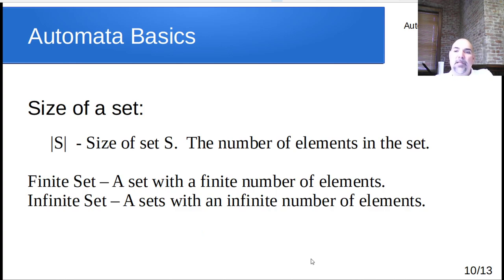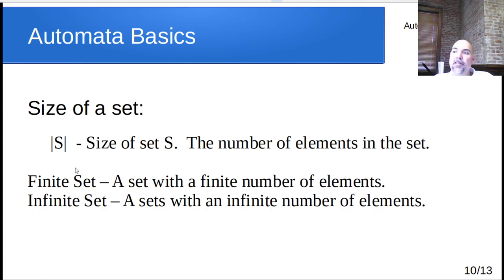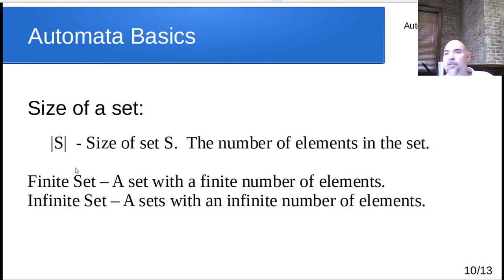The size of a set is represented with vertical bars around the set name, like |S|. That just means how many elements are in that set. Sizes can be finite — zero, one, two, or some arbitrarily large finite number — or they could be infinite, like the integers or real numbers. For example, the set of binary digits {0, 1} has size two, and the set of lowercase alphabet letters has size 26. This vertical-bar notation gives us the cardinality or length of a set.